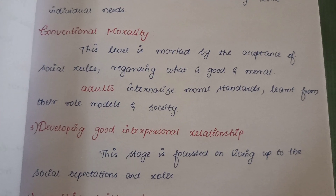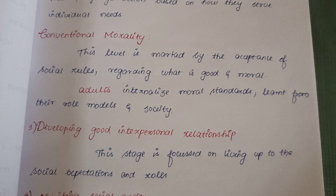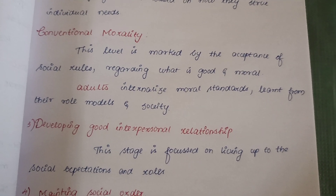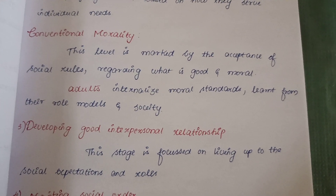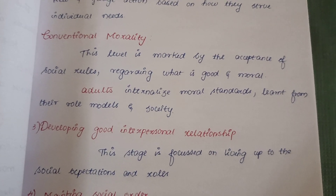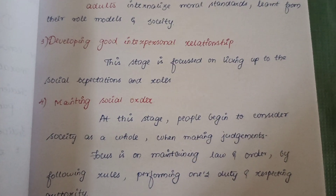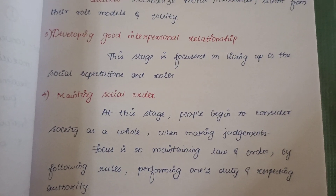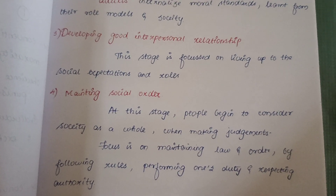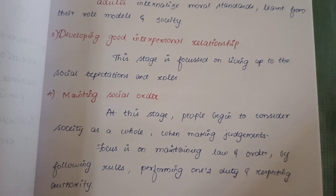Next is conventional morality, which is the second level of moral development. Here, children must accept social rules. Children are in the teenage or adolescent stage. What is good and what is wrong is based upon social rules. The first stage here is developing good interpersonal relationships — this age is the best for developing relationships, focused on living up to social expectations and roles.